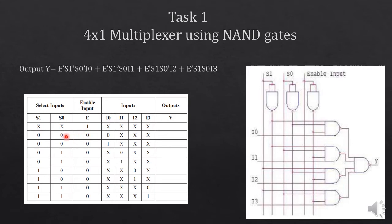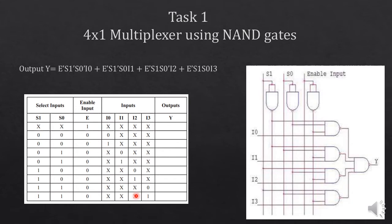When you select 00 at the selection inputs, only I0 will be transferred to the output regardless of I1, I2, and I3. When the selection input is 01, I1 will be transferred. When the selection inputs are 10, I2 will be transferred. When the selection input is 11, I3 will be transferred to the output.